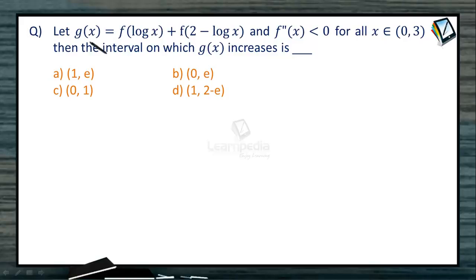The function g(x) is defined as a composite function: f(log x) + f(2 - log x). Given data states that f''(x) < 0 for all x in (0,3). We need to find the interval where g(x) increases. First, let us analyze f.